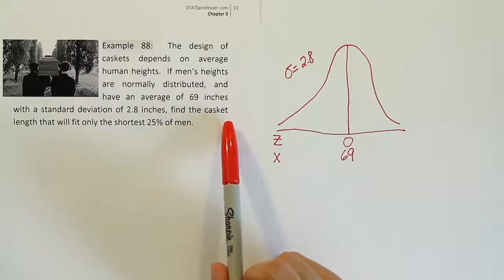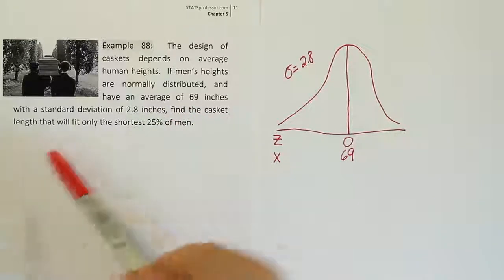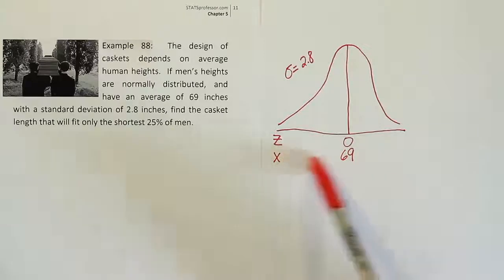This doesn't say find the probability. So this lets me know that this is automatically a problem where we're using the table in reverse because it's asking us to find a value. Find the casket length, that is a value from the bottom here of the drawing.